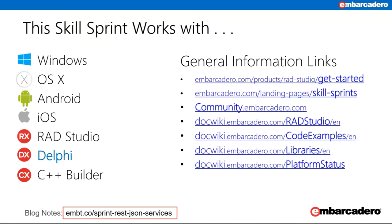This skillsprint works with Windows, OSX, Android and iOS for both the client and server-side applications. We're also going to take a look at how to convert the service application into an ISAPI plugin for Microsoft IIS, which of course will be for Windows only. The same technique can be used to convert the service into other formats such as an Apache plugin.